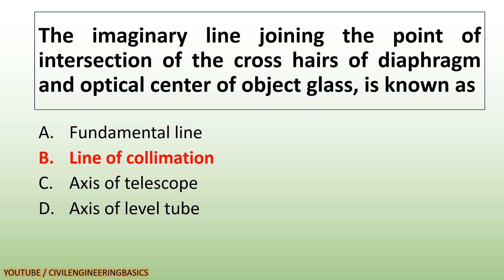The imaginary line joining the point of intersection of the cross hairs of the diaphragm and the optical center of the object glass is known as the line of collimation.